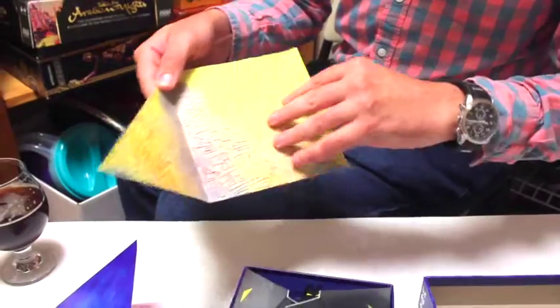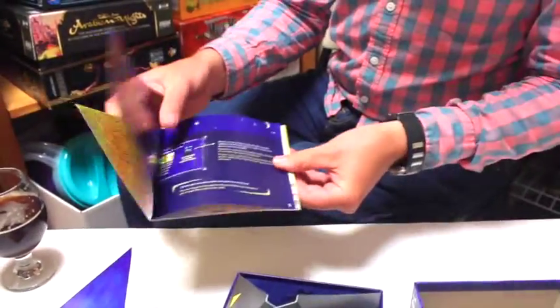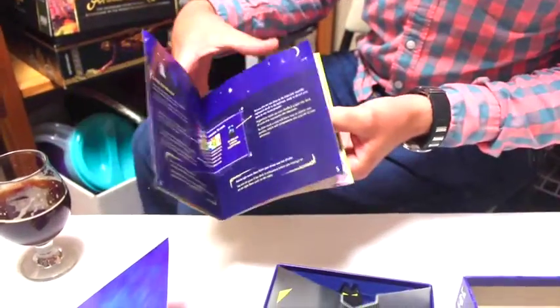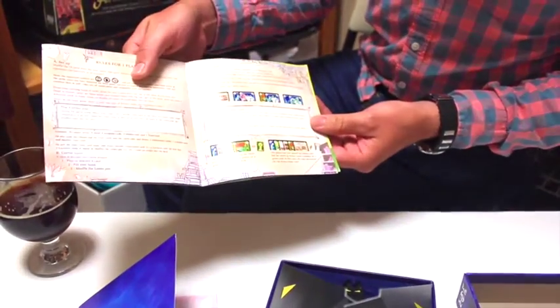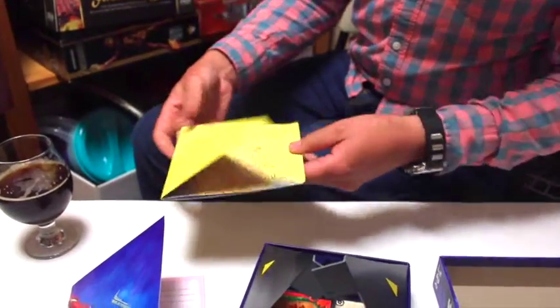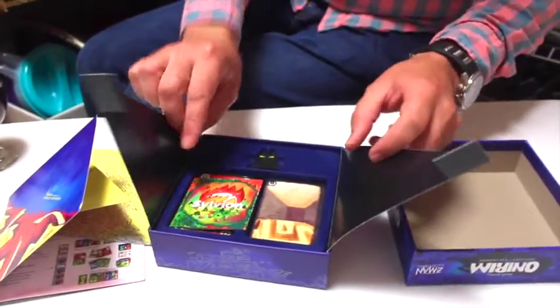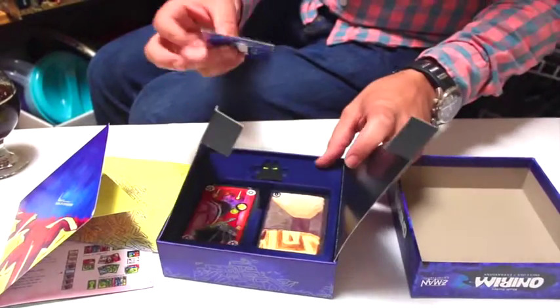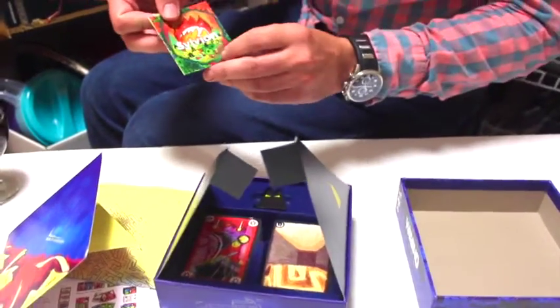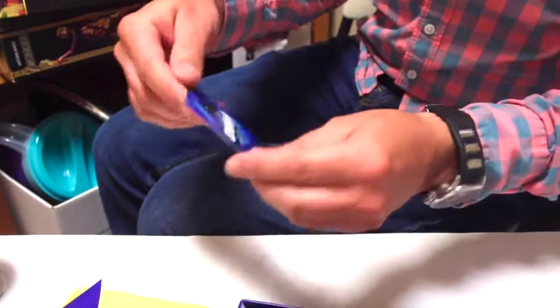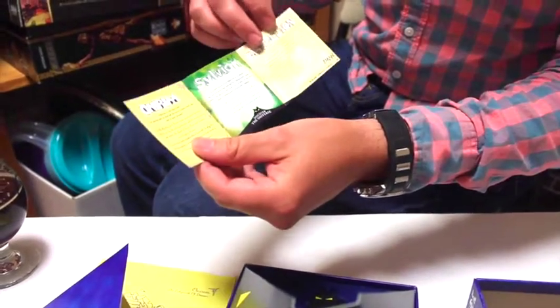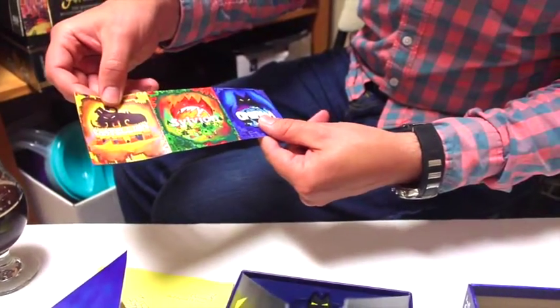It looks like another set of rules or game overview. Very cool. I like this box, very intrigued so far. Survive - Sylveon and Oniram. This must be a little pamphlet about other games. Very cool.